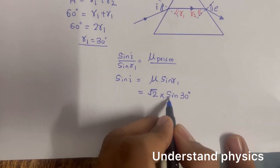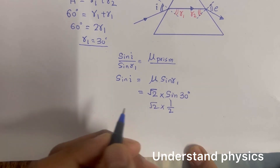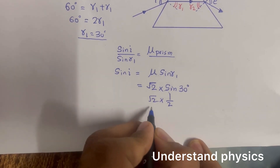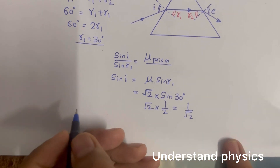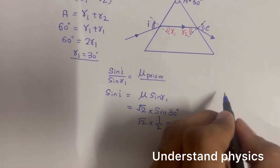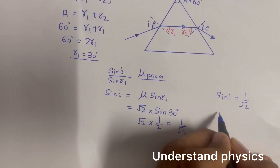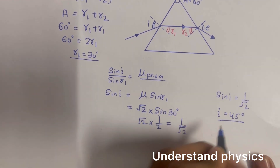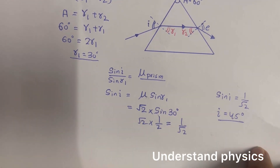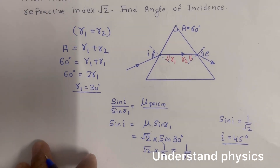Sine 30 is 1/2, so sine i equals root 2 times 1/2, which gives 1 over root 2. Therefore, sine i equals 1 by root 2, which means the angle of incidence i is 45 degrees. So the angle of incidence is 45 degrees for this problem.